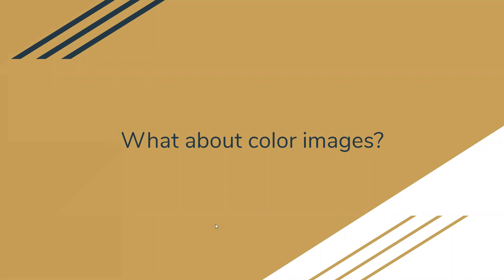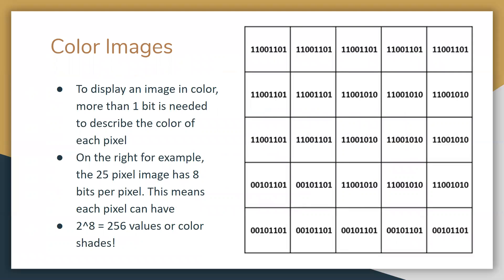Now, what about color images? This is where you focus on the amount of bits per pixel. To display an image in color, more than one bit is needed to describe the color of each pixel. On the right, for example, you can see 25 pixels arranged in a 5 by 5 grid.